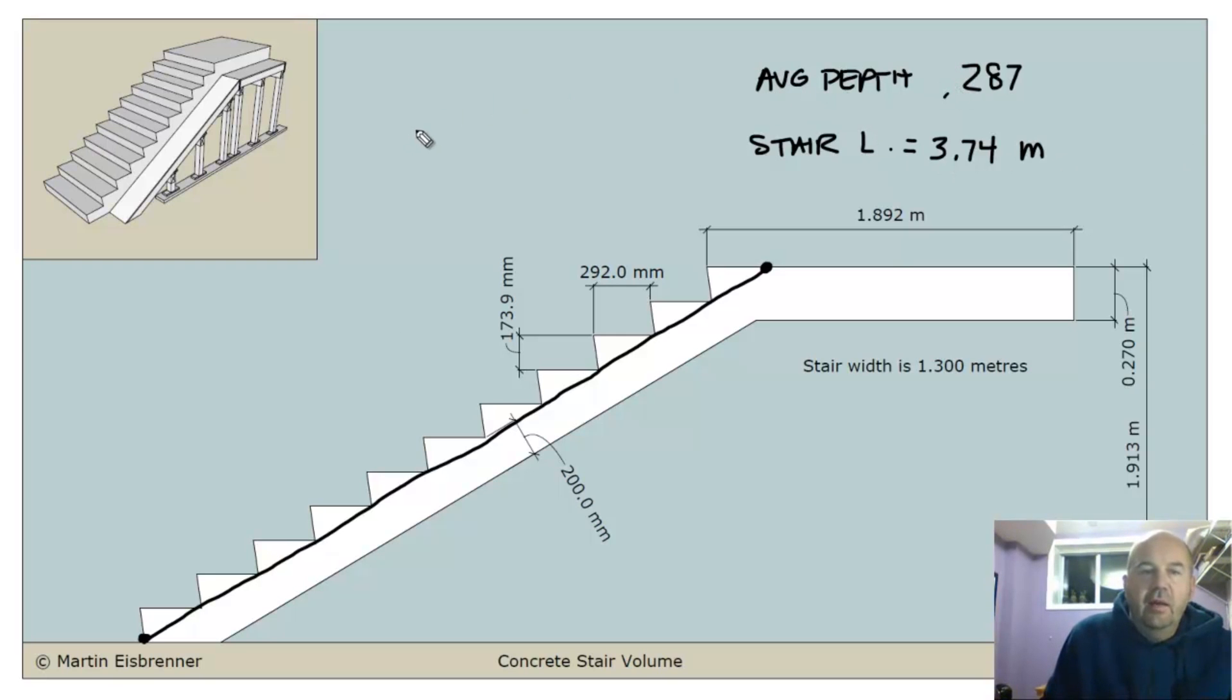So, I found out the average depth, which is 0.287. My stair length is 3.74. And, hidden over here, I say that the stair width is 1.3 meters. So, to calculate volume, I obviously need three numbers. And, if I multiply these three numbers together, I end up with 1.395.